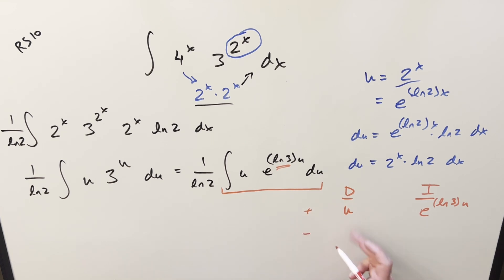So first, derivative of u is 1. Do it again, we get a 0. Here, integral on this, we're going to get e ln 3 times u, and then ln 3 is going to pop out. Do it again, same kind of thing. e ln 3 u, and then now multiplying times this. Again, this is going to be ln 3 squared.